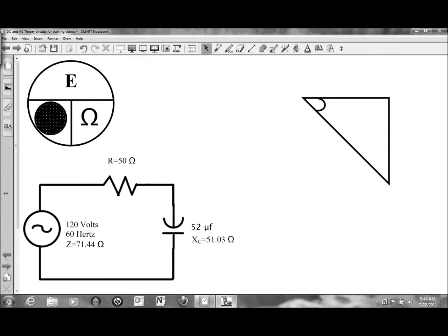So applying Ohm's Law, cover up what it is that we need. I total is E total divided by Z, which is the total opposition of current flow in the circuit.